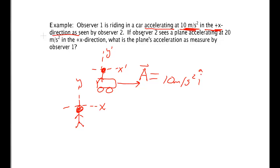Now let's see what else we see. It says Observer 2. Remember that's my unprimed observer. Sees a plane. Alright. Here's a plane. The plane is accelerating at 20 meters per second squared in the x direction. So that's an object. That's a little a. It's measured by the unprimed person. So it gets no prime. 20 meters per second squared i hat.